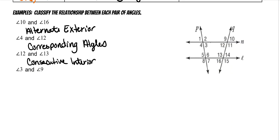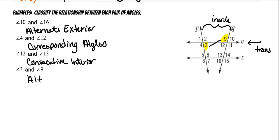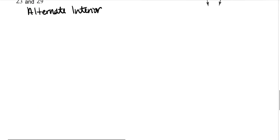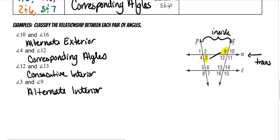The last one is angles three and nine. That makes this the transversal. They're on opposite sides, crisscrossing on the inside, so they are alternate interior angles. And that's the end of our notes.